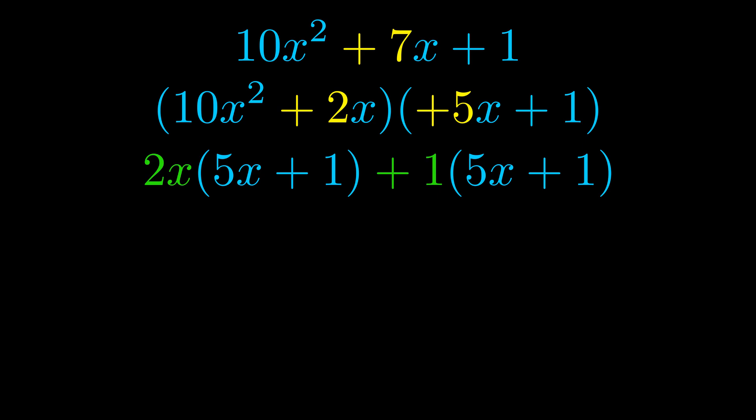Notice also how what remains inside the parentheses is the same in both cases. The blue values are the same. Those blue values will become one of our factors, and we will combine the two green values—the GCFs that we pulled out—to get the other one. And that is our fully factored equation.